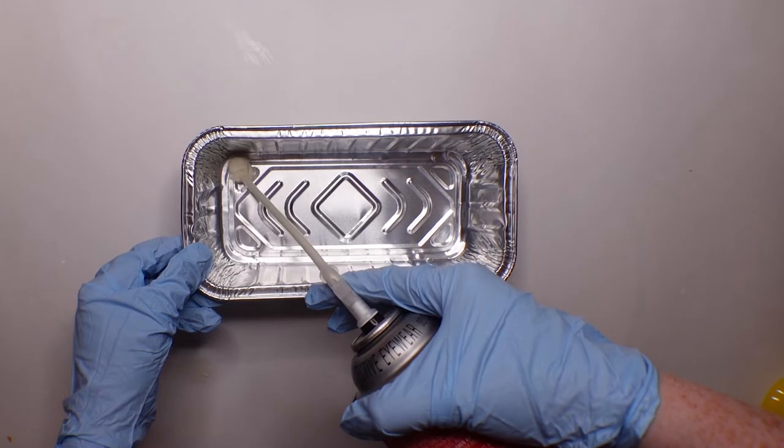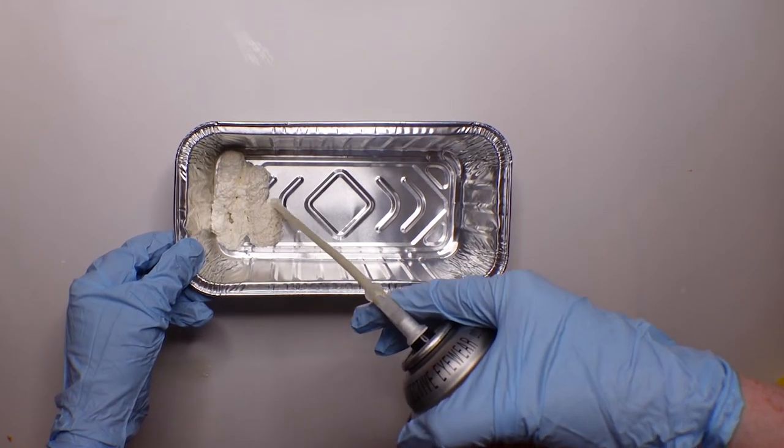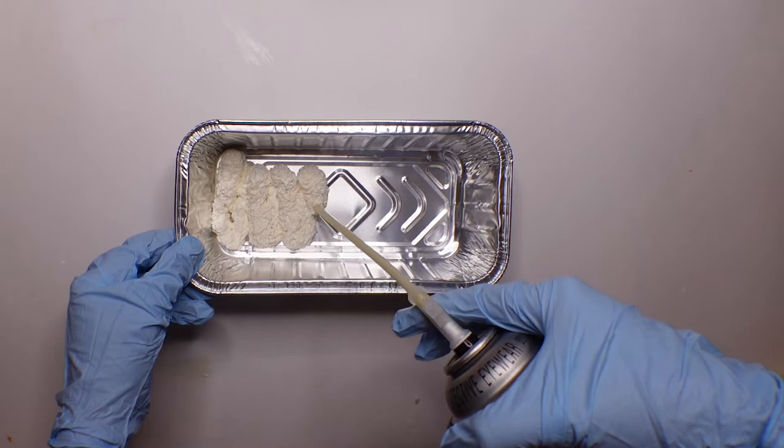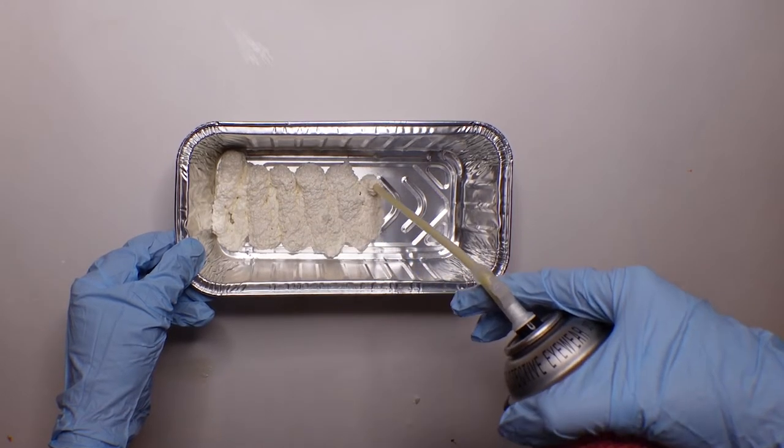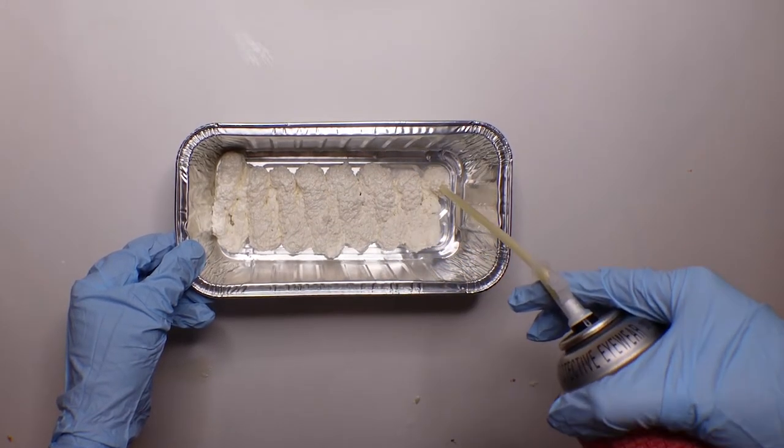Next, start gently spraying the foam into the bottom of a bread tin, and I like to do this kind of vertical up and down motion as I spray.